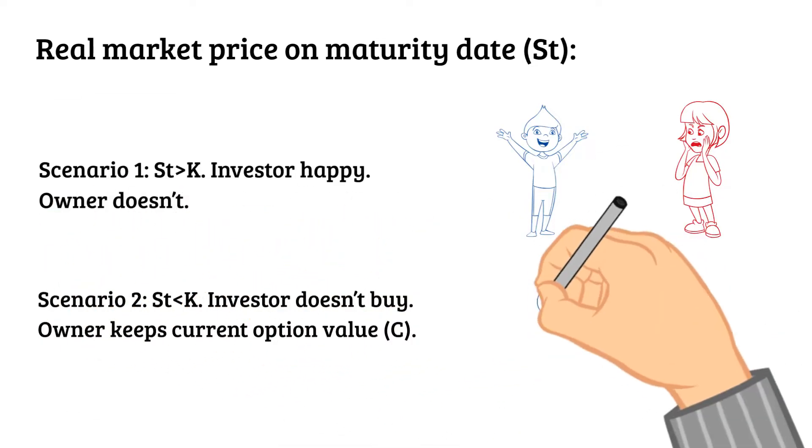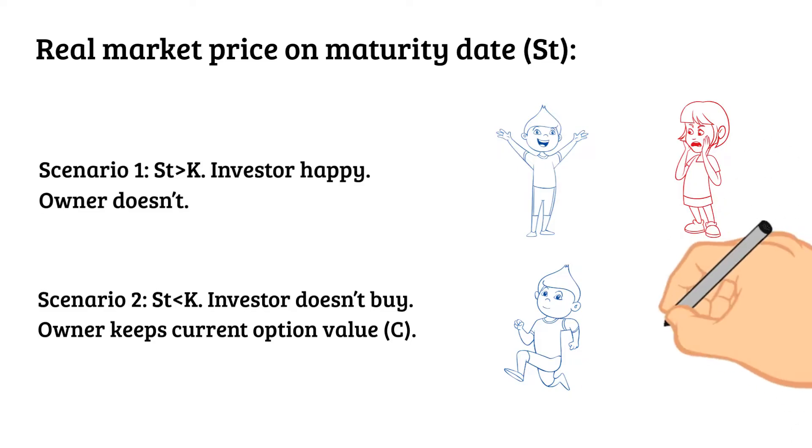Blue might choose not to purchase these stocks because it's more cost efficient to purchase them straight from the market. However, even if Blue decides not to buy from Red, Red can still keep the current option value, which is $6.50.